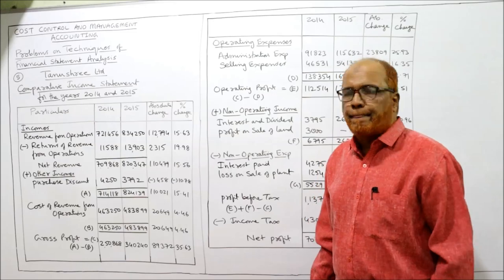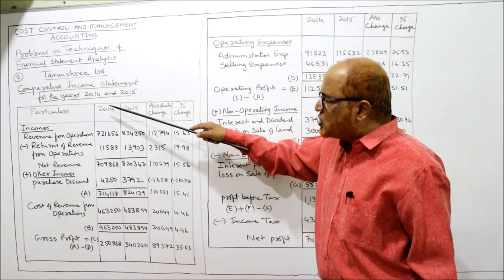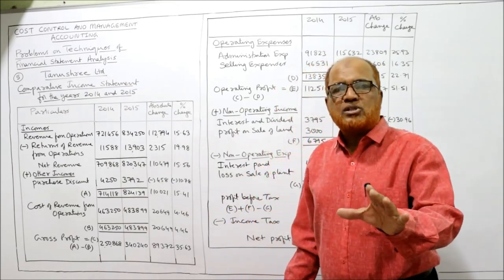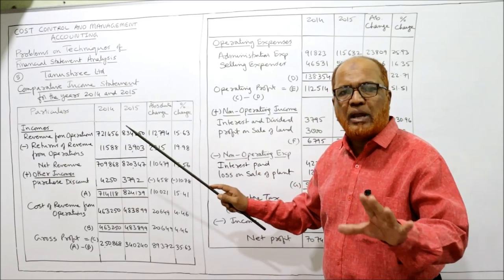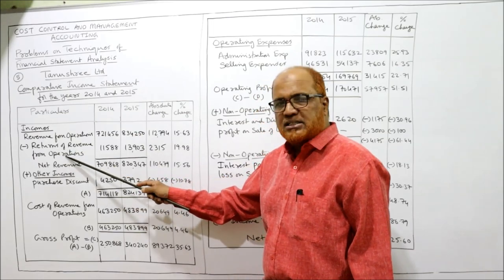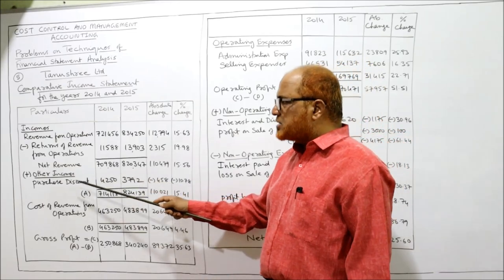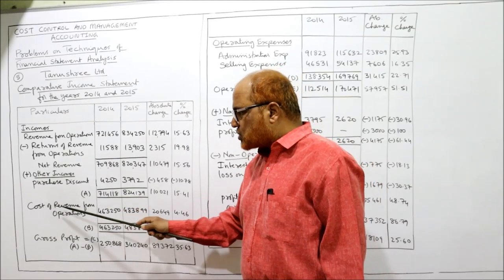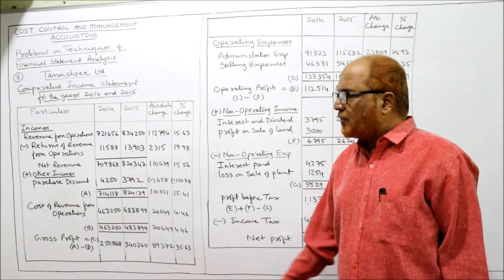Already two or three problems I have explained in detail. Now incomes: revenue from operations is given in the problem. First of all we fill up the first two columns. Don't write anything in absolute change or percentage change yet — I will explain afterwards. First, whatever figures are given for 2014 and 2015, we write them down as is. Revenue from operations for 2014-15, then return of revenue from operations deducted, giving us net revenue, or net sales. Other incomes are purchase discount, then cost. The total income is A, cost of revenue from operations is B, so A minus B is the gross profit.